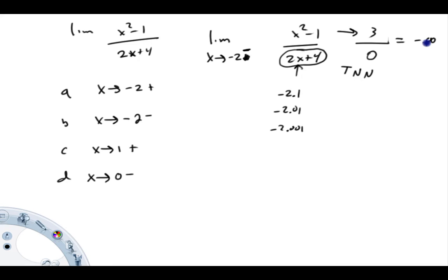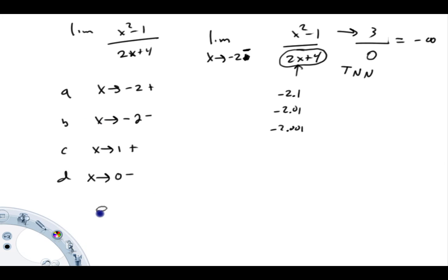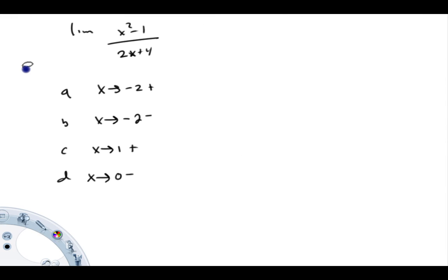Let me get rid of what I don't need. We'll look at the other couple here. Next up, limit as x approaches 1 from the right of the expression x squared minus 1 over 2x plus 4.